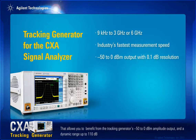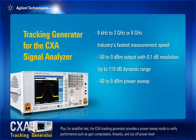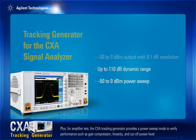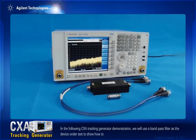The tracking generator provides a minus 50 to 0 dBm amplitude output and a dynamic range up to 110 dB. For amplifier test, the CXA tracking generator provides a power sweep mode to verify performance, such as gain compression, linearity, and cutoff power level.